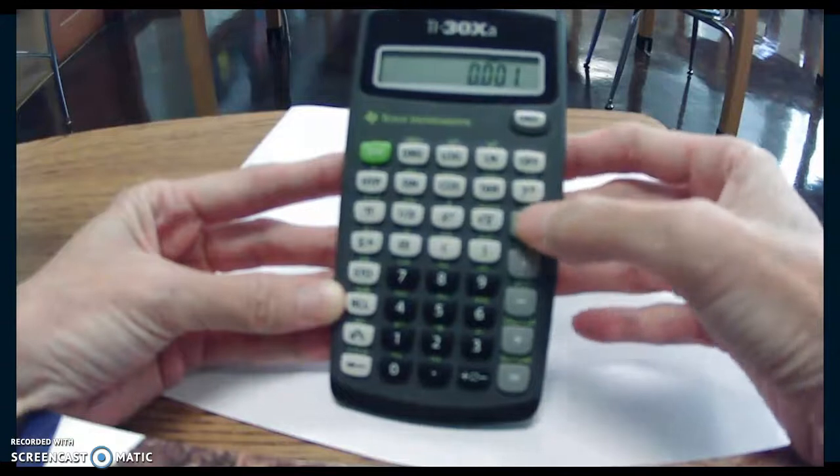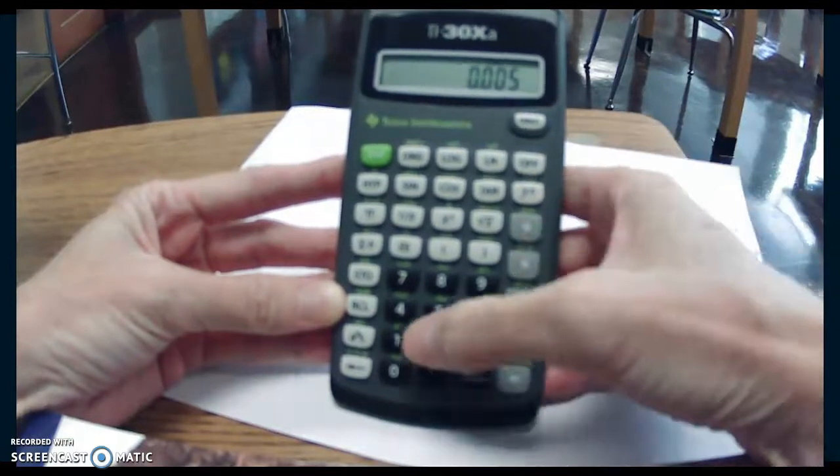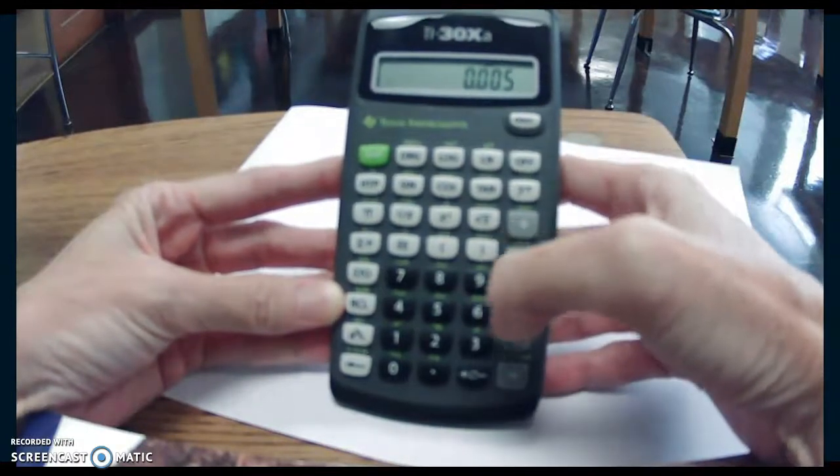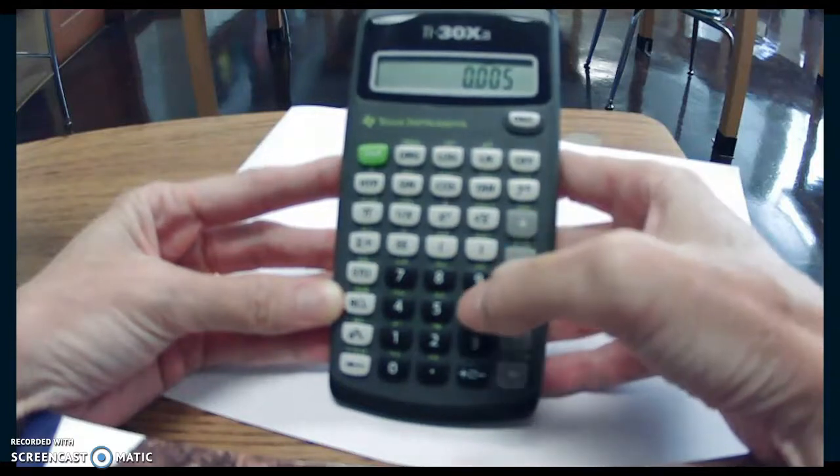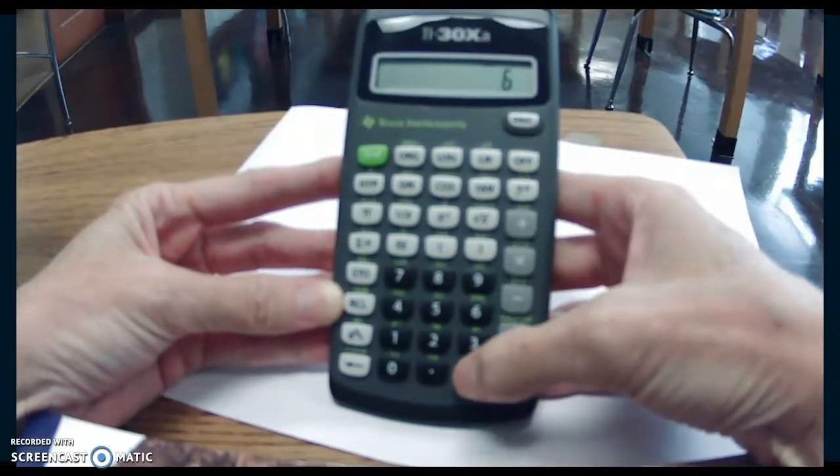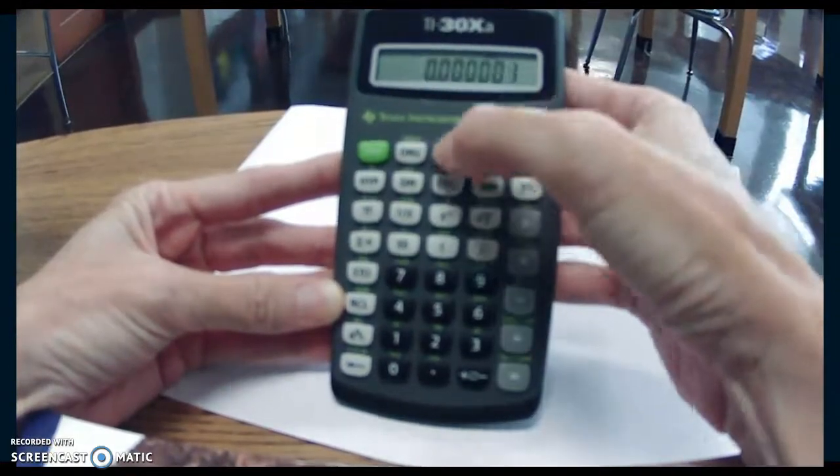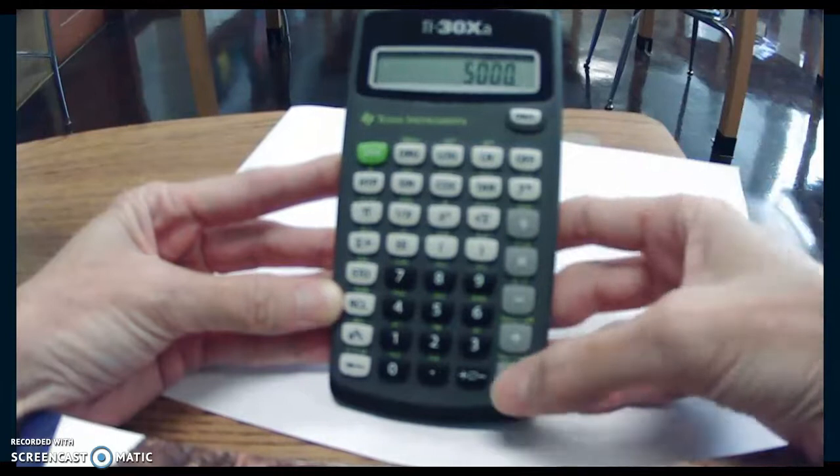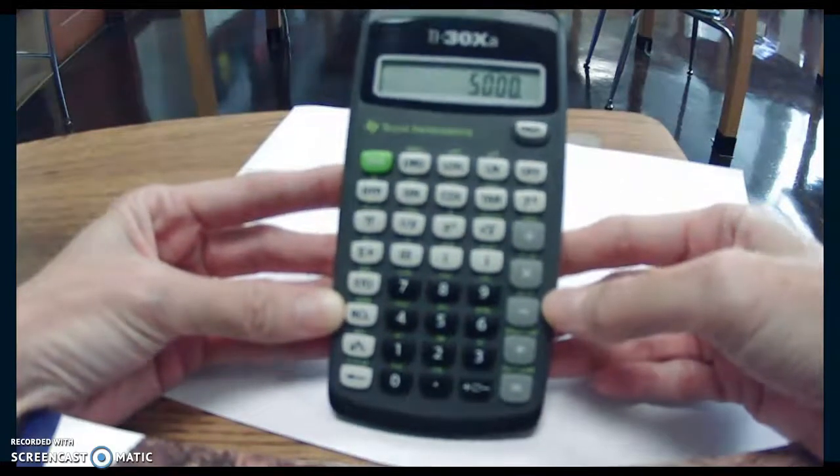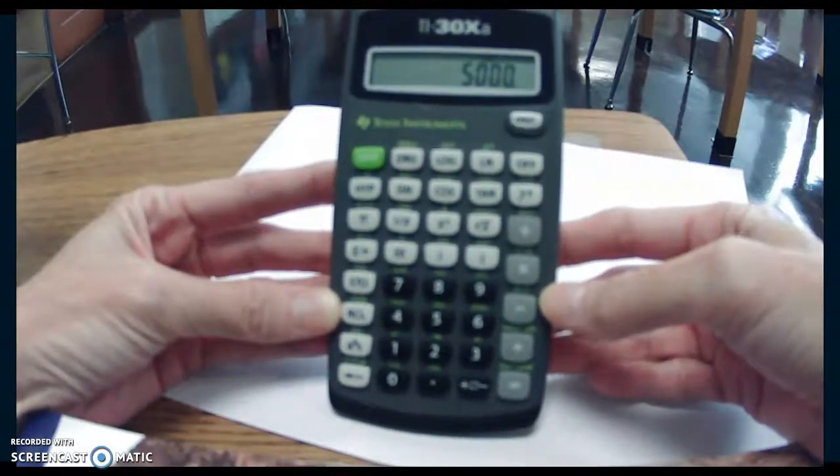Now we want to divide by 10 to the minus 6. So now again, we're putting the exponent in first. So 6, make it negative, second function, 10 to the x, and then hit equals. You should get 5,000 again for that sequence.